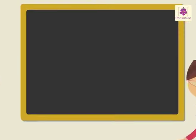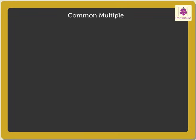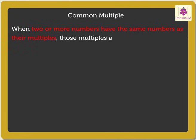Let us understand the meaning of the term common multiple. When two or more numbers have the same numbers as their multiples, those multiples are said to be common multiples.